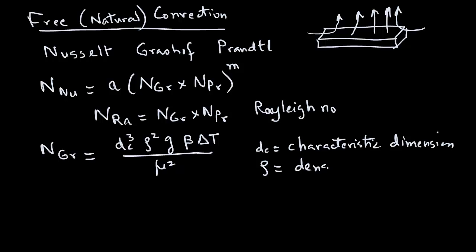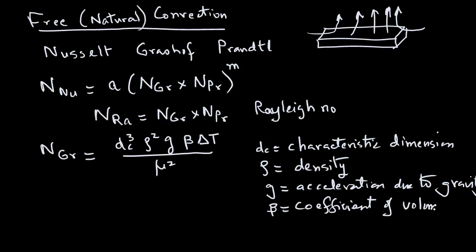Rho is the density of the fluid, g is the acceleration due to gravity, beta is the coefficient of volumetric expansion. Recall that when the temperature of the fluid increases, it is going to expand. So this coefficient tells us something about how much expansion of the fluid will take place. Delta t is the temperature difference between the surface of a solid and the surrounding bulk fluid temperature. Mu is the viscosity.